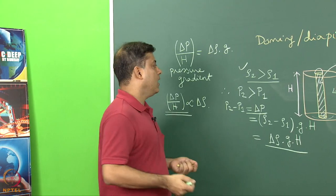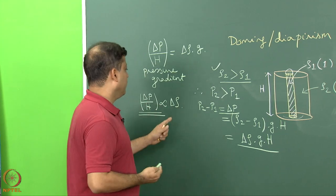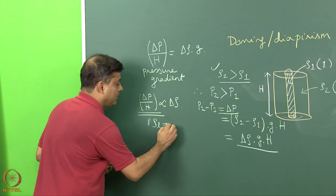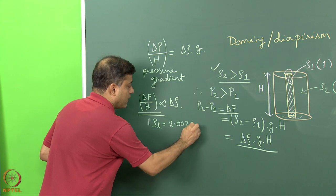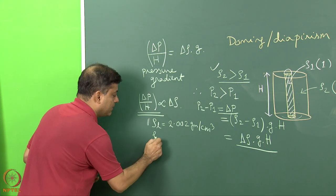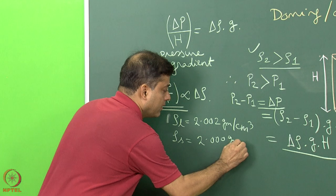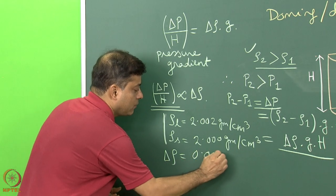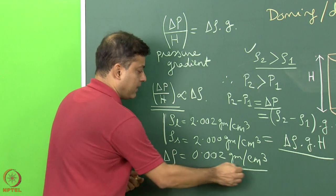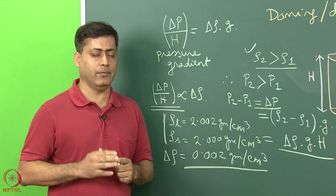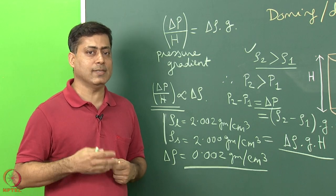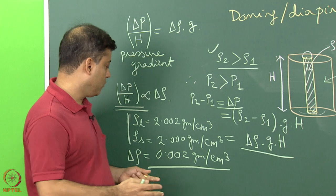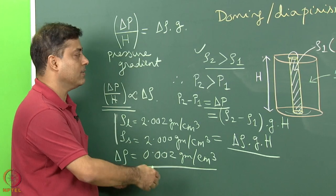It is important to understand how much is the delta rho in case of salt domes in the Persian Gulf. The density of limestone can be 2.002 grams per cubic centimeter and the density of salt 2.000 grams per cubic centimeter. The delta rho value turns out to be 0.002 grams per cubic centimeter, which is certainly very small. However, in geological time spans of thousands or millions of years, this minor difference can lead to extrusion of material. For Persian Gulf salt domes, this density difference acting for the last 10,000 years led to extrusion of salt.